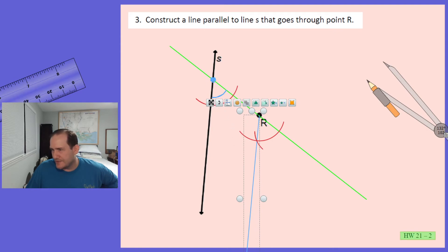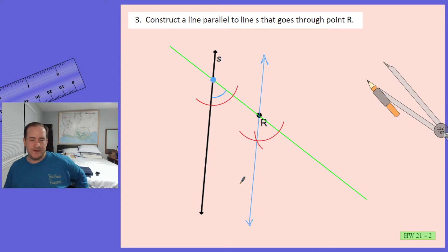And these lines should be parallel. This construction tends to be not super precise, but that's pretty good. Mine looks pretty much perfect. Hopefully yours looks perfect too. But there you go. That blue line is parallel to the black line. That's three different methods for constructing parallel lines. Again, I absolutely think that the first method is the best, but here's three different methods.